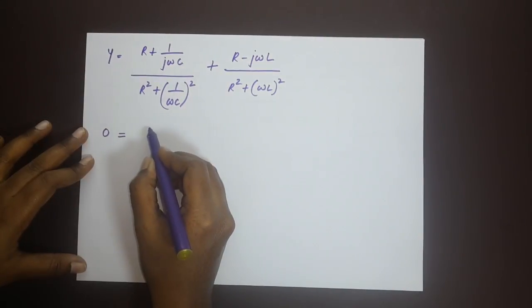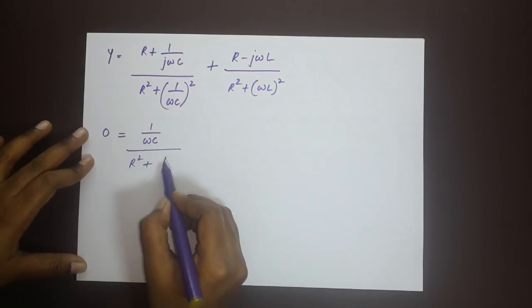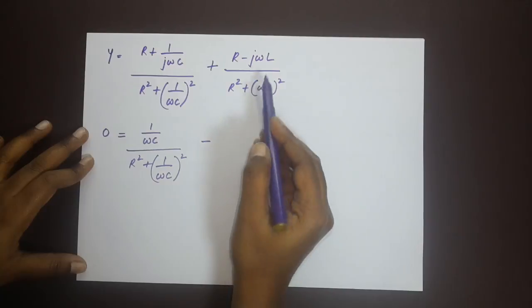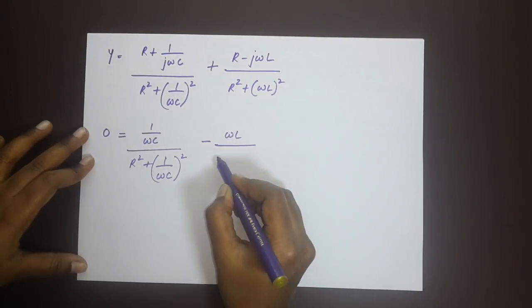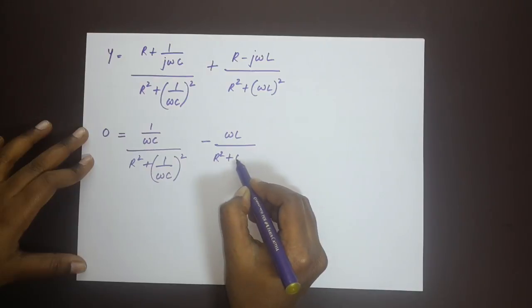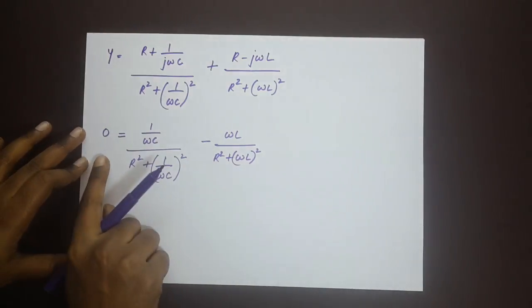That would be 1 by ωc imaginary part divided by R square plus 1 by ωc whole square minus here ωL is the imaginary part divided by R square plus ωL square. This is equal to zero.